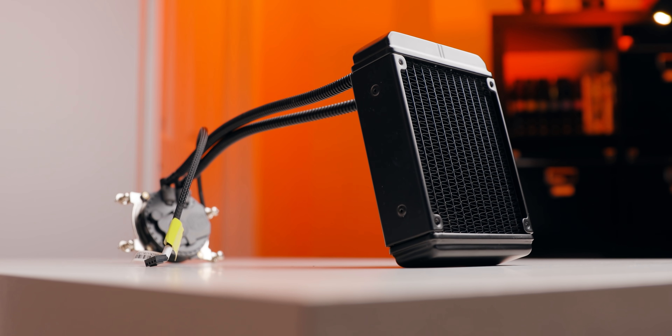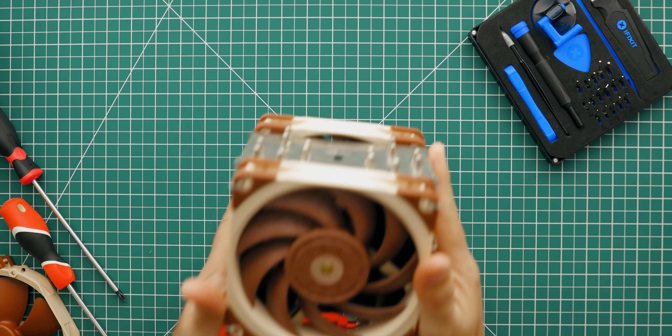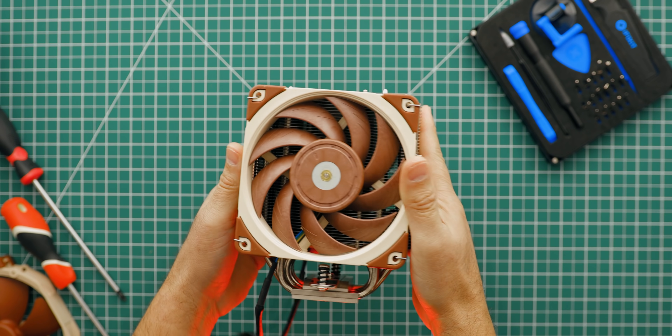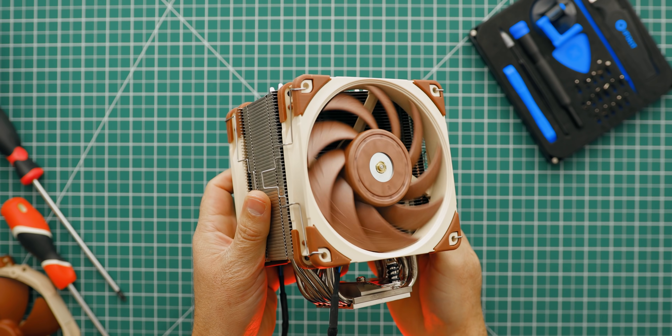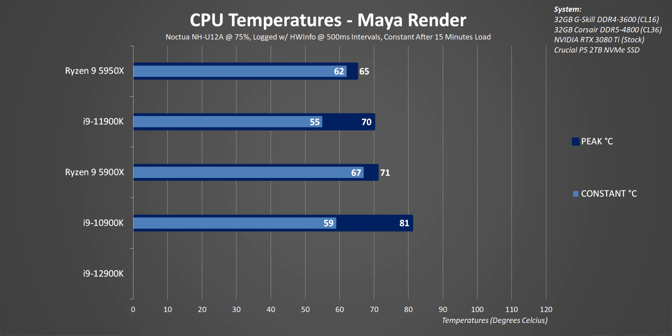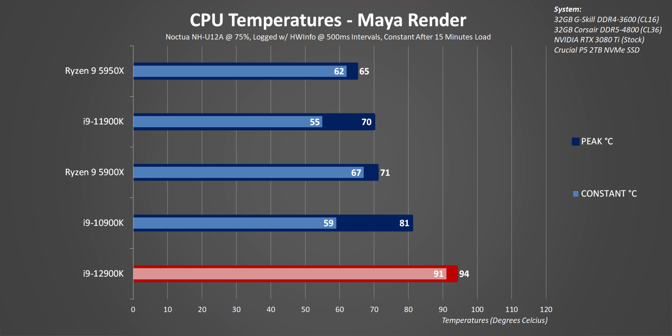In terms of cooling, a constant 225 watts is a lot for any heatsink to handle. The last time a chip behaved like this at stock was the AMD FX9590, and that thing came with an AIO cooler by default for a reason. To give you an example, we slapped the Noctua NH-U12A onto the 12900K, set the fans to 75%, and hit it with an all-core Maya load. And here's what happened compared to other CPUs.